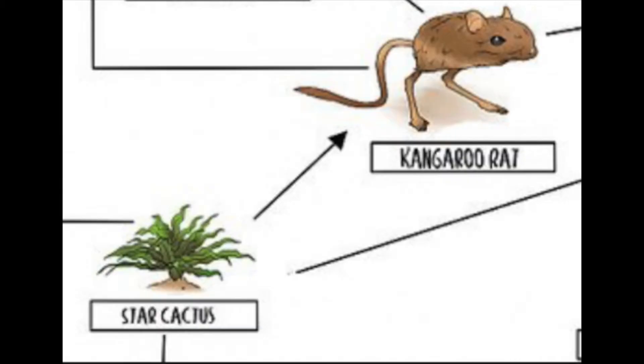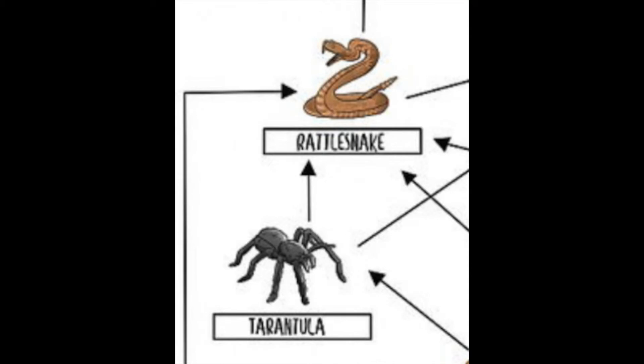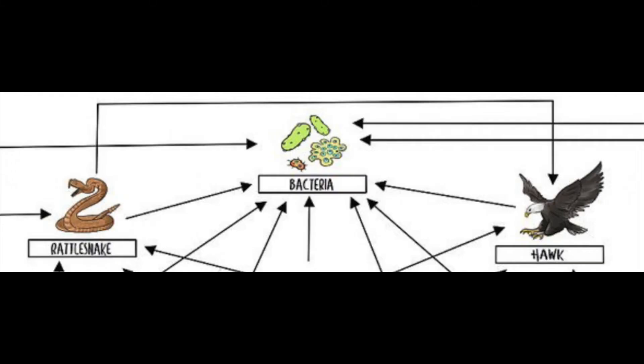For another example, let's follow one singular food chain within this desert biome food web and identify how each organism is classified. The star cactus, acting as our primary producer, is eaten by the kangaroo rat, making the kangaroo rat our primary consumer at the second trophic level. The kangaroo rat is then eaten by a tarantula, making the tarantula the secondary consumer at the third trophic level. The tarantula is eaten by a rattlesnake, which becomes the tertiary consumer at the fourth trophic level. The rattlesnake is then eaten by a hawk, making the hawk our quaternary consumer at the fifth trophic level and, in this case, our apex consumer.